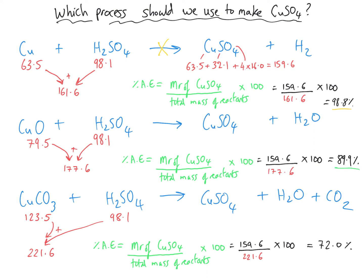The second reaction gives 89.9% atom economy — still pretty high, not very much waste. But this reaction requires heating and has a really slow rate of reaction. So you might choose to move on to the third reaction, because copper carbonate and sulfuric acid react instantaneously and fizz like crazy — it's quite fast. So even though you've only got a 72% atom economy, you might choose to make the process quicker by using the faster reaction of copper carbonate.